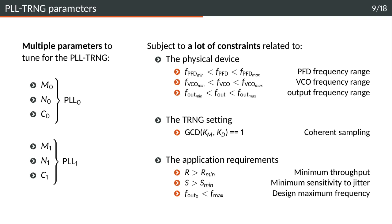If we look at the PLL-TRNG, we have multiple parameters to tune: M, N and C for both PLLs, PLL0 and PLL1, so that's six parameters. Those parameters are subject to a lot of constraints related to the physical device because the analog part of the PLL has specific frequency ranges for the PFD, the VCO and the output frequency.